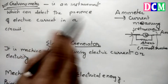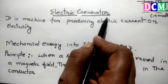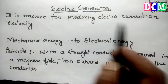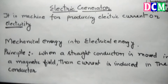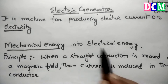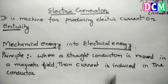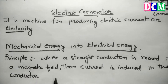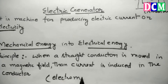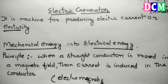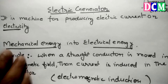Galvanometer is an instrument which can detect the presence of electric current in a circuit. An electric generator is a machine for producing electric current. It converts mechanical energy into electrical energy. The principle is that when a straight conductor is moved in a magnetic field, current is induced in the conductor — that is electromagnetic induction. The principle of an electric generator is electromagnetic induction.